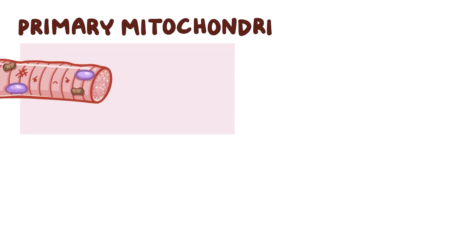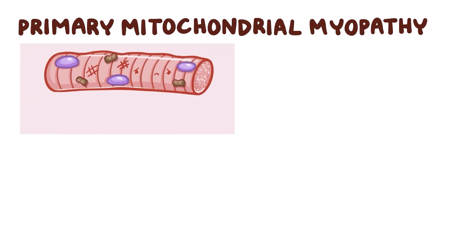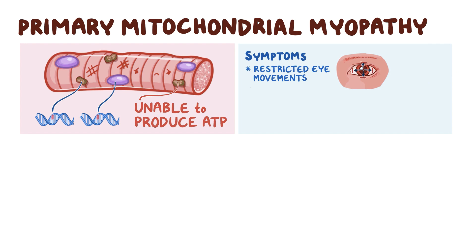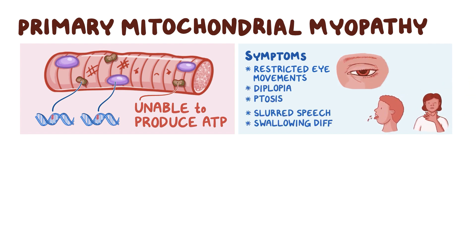As a quick recap, primary mitochondrial myopathy is a genetic disorder caused by mutations in the mitochondrial or nuclear DNA, which results in the inability of muscle cells to produce enough ATP. Common symptoms include restricted eye movements, diplopia, ptosis, slurred speech, swallowing difficulty, muscle weakness and wasting, and respiratory failure.